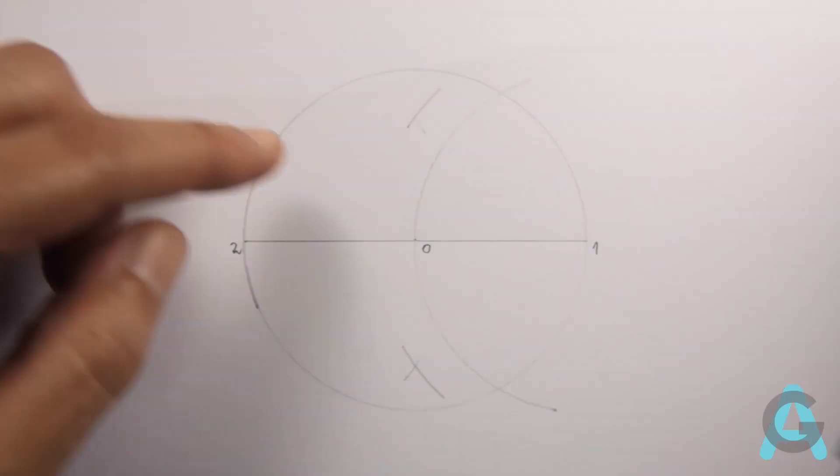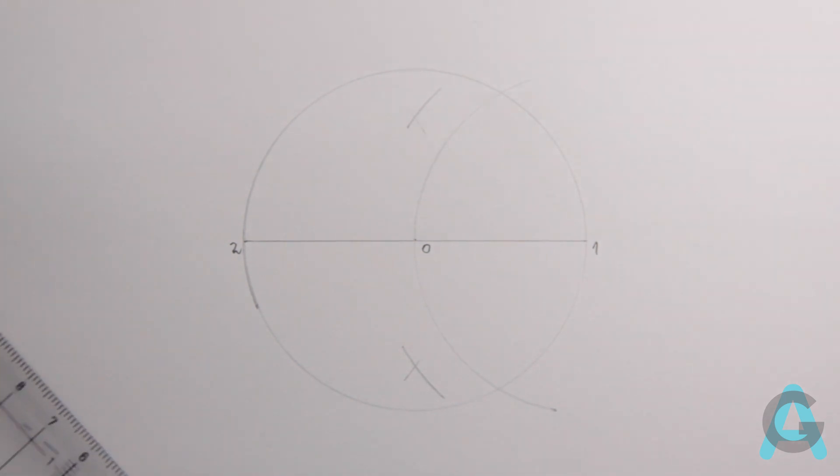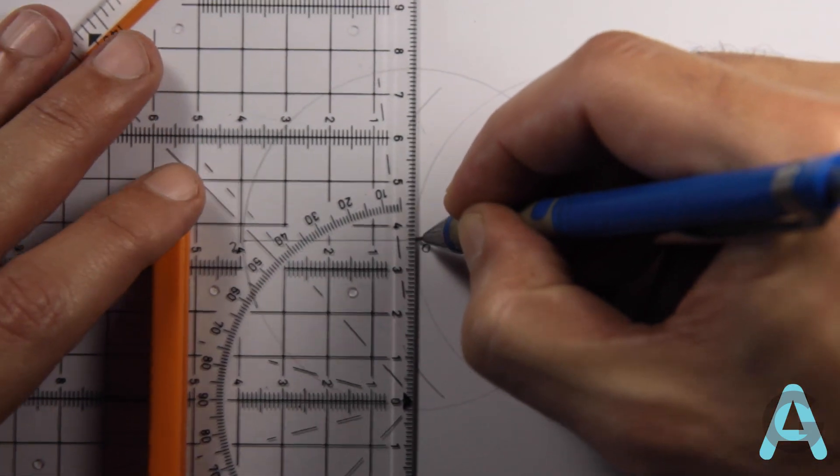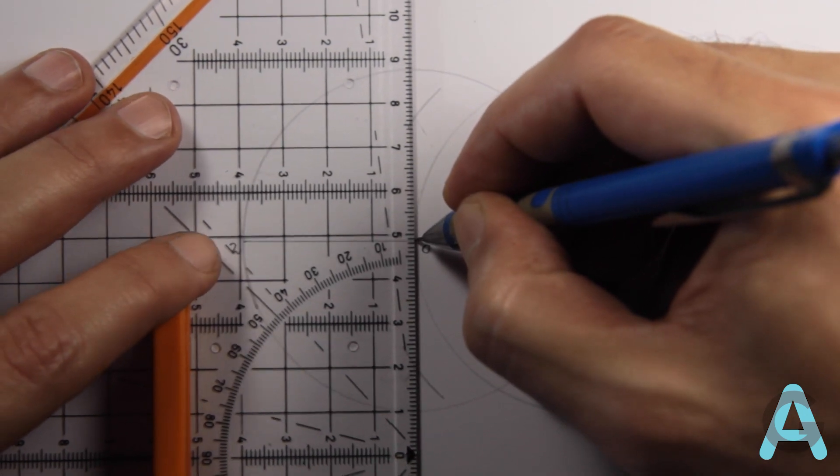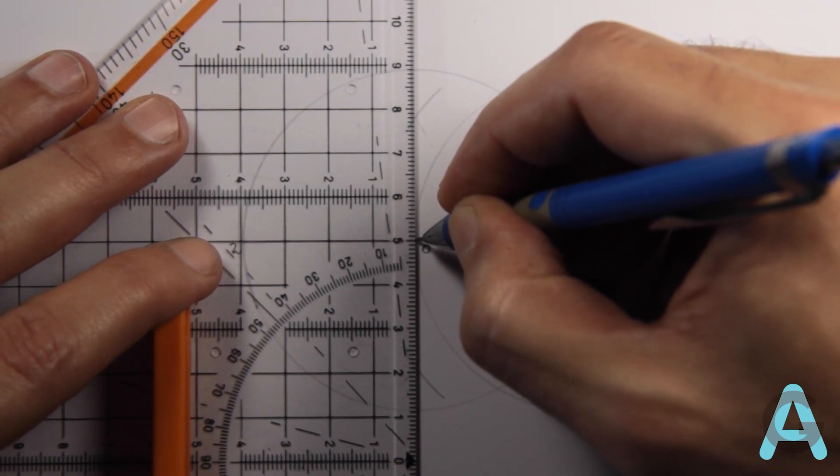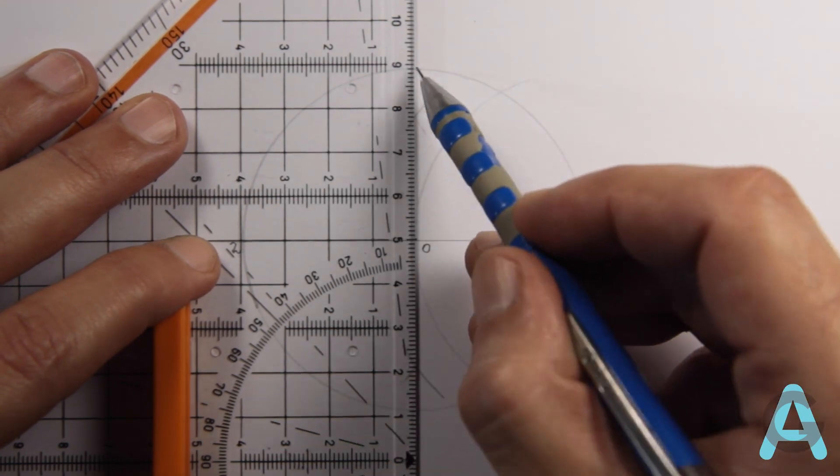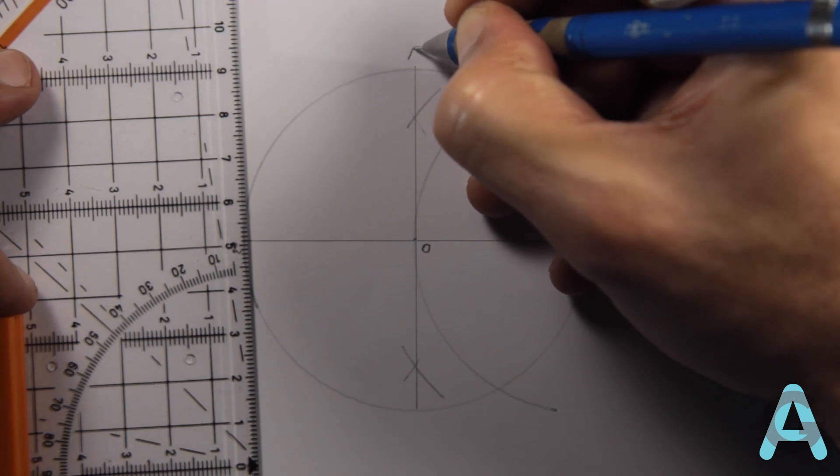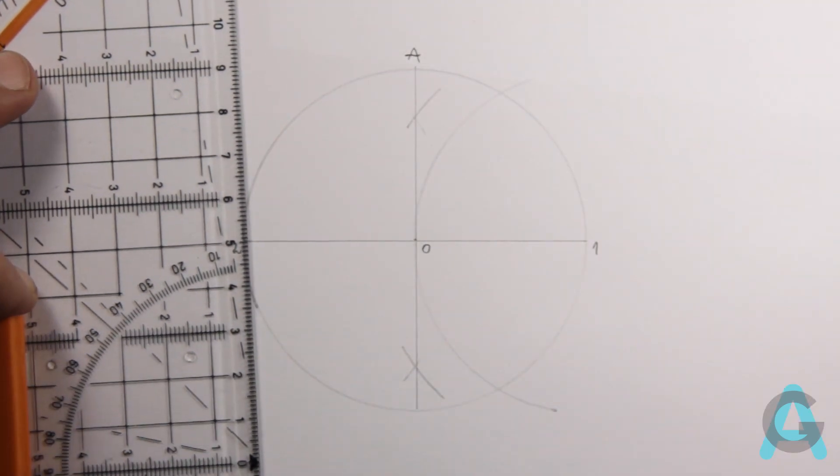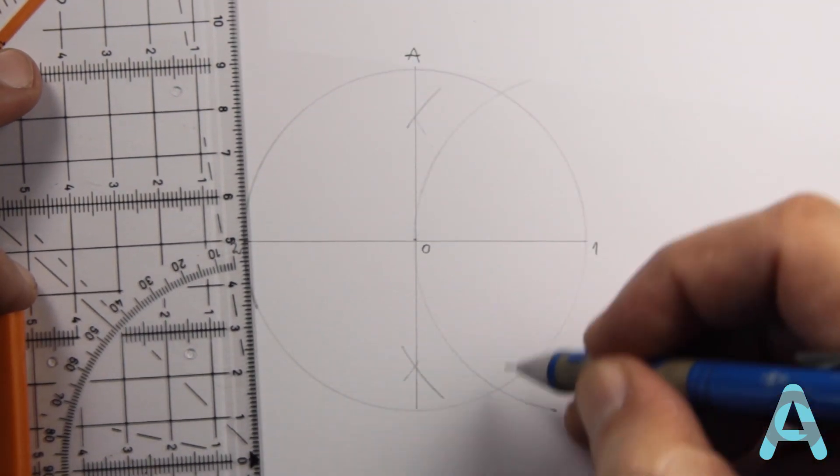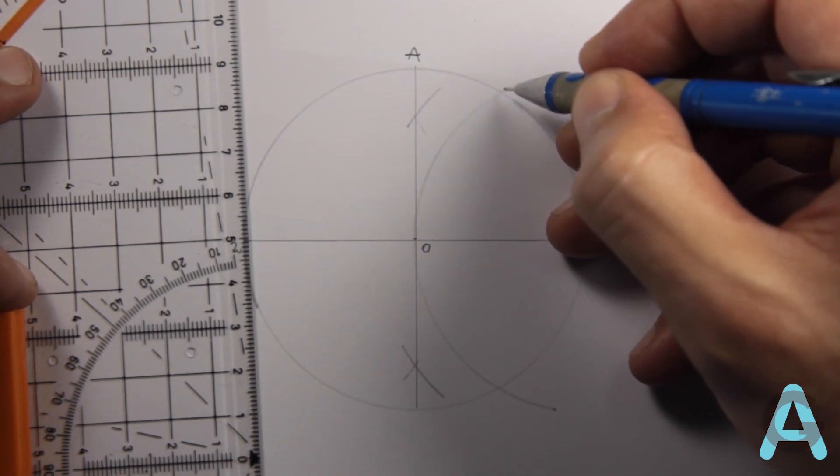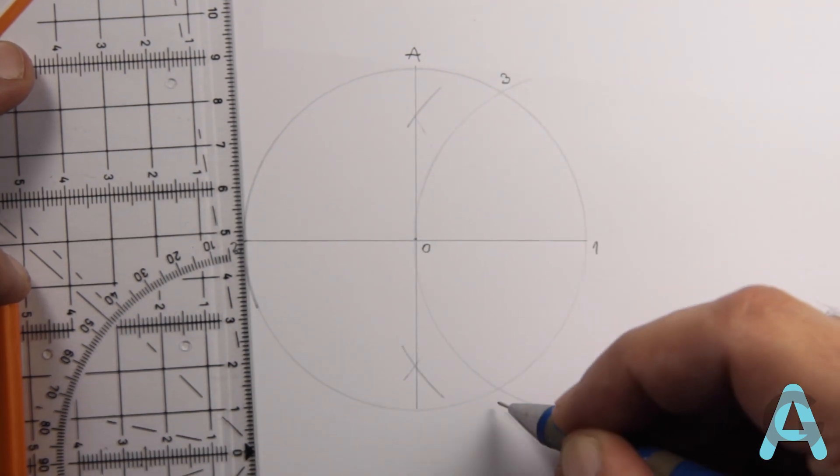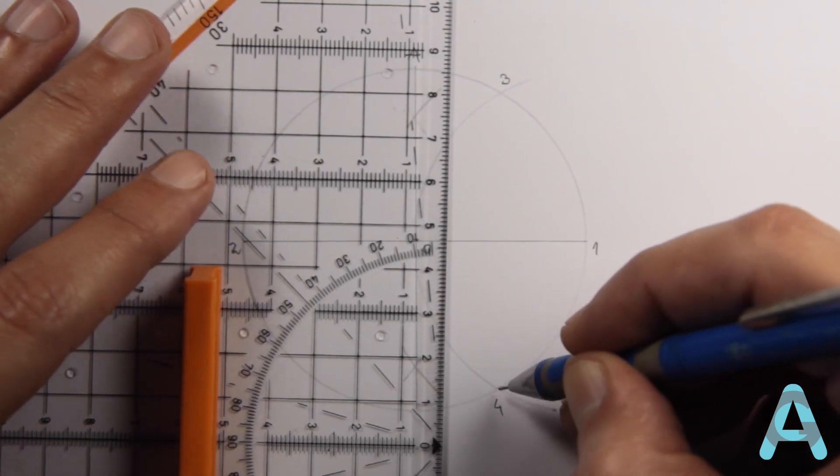Then repeat the operation with the needle in point 2. We'll connect the two points that we defined, and we'll have the second diameter which is perpendicular to the first one. We have the point 3 and below the point 4. Let's connect them.